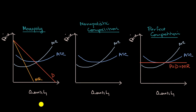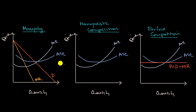We have already thought about the demand curves for perfect competition and monopolies and the types of economic profit that might result. In this video, we're going to focus on something in between, which we've talked about in previous videos: monopolistic competition. In all three scenarios, we have a similar cost structure — our marginal cost curve and our average total cost curve, which is at a minimum point right where it intersects the marginal cost curve.